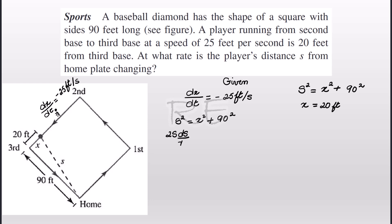Now, when we take the derivative of both sides with respect to time, we get 2s ds/dt is equal to 2x dx/dt, and the derivative of 90 squared, which is a constant, is 0. So ds/dt, when we divide both sides by s, is equal to x over s times dx/dt.